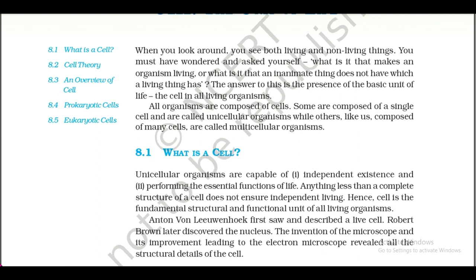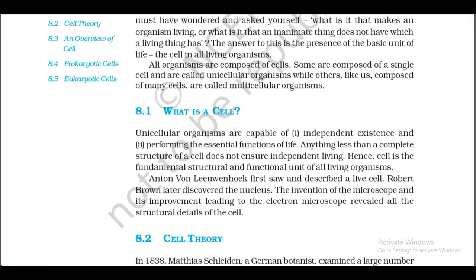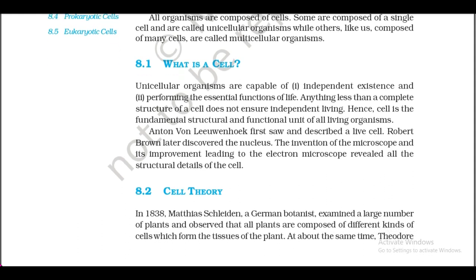Some organisms are composed of a single cell and are called unicellular organisms, while others like us, composed of many cells, are called multicellular organisms. Section 8.1: What is a cell? Unicellular organisms are capable of independent existence and performing the essential functions of life.